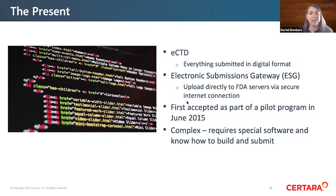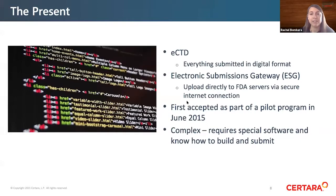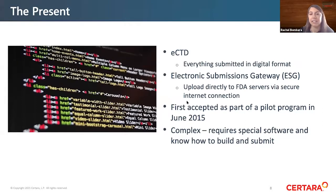Now, moving into the present, these submissions are moving more towards eCTD and using the Electronic Submissions Gateway to transmit them to the FDA, so they can go through an automated process and get directly uploaded to FDA's servers. This started as a pilot program back in June 2015 for promotional labeling submissions in eCTD. The process is more complex — special software is required, and you have to know how to build and submit these submissions so they pass validation and all technical checks.